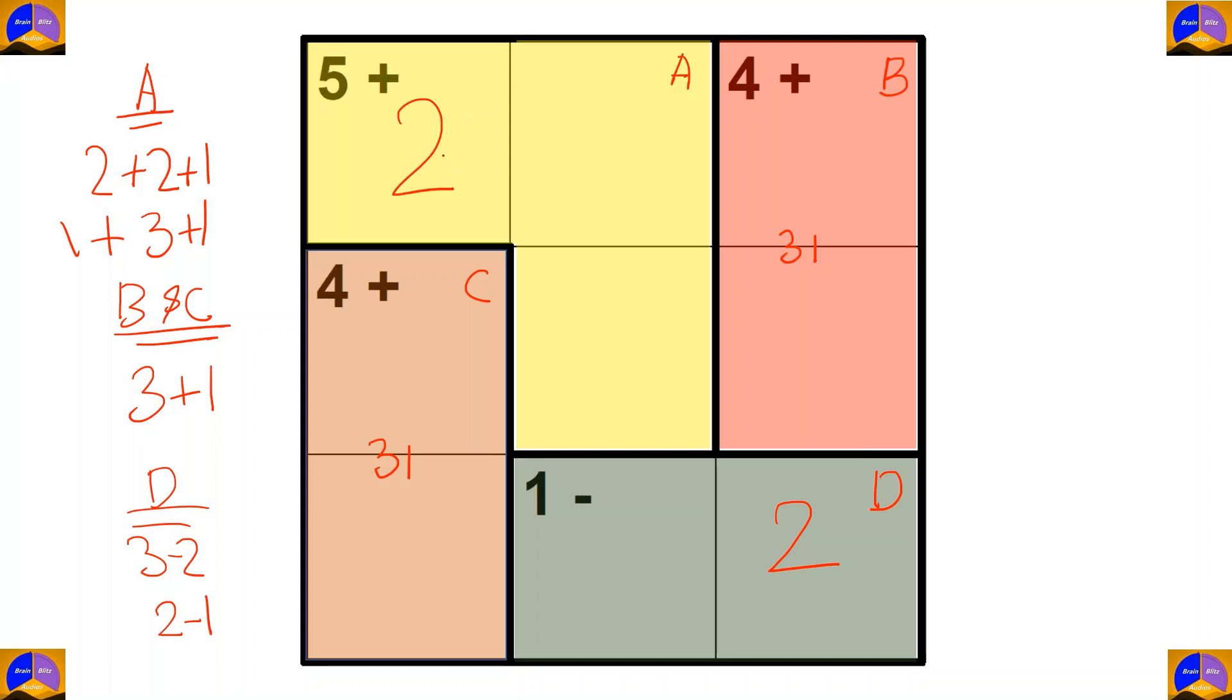Now, here there is only 2 in one option. So, this option will be cut. And we get the option here. Now, 2 can't be here as it will be a repeat of 2 in the same row. So, we'll write 2 over here and 1 over here.